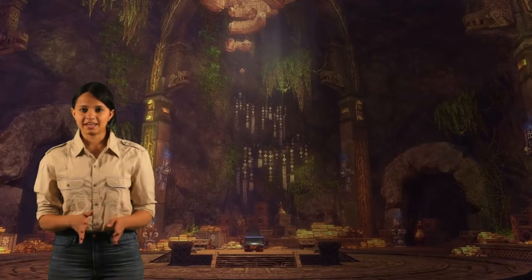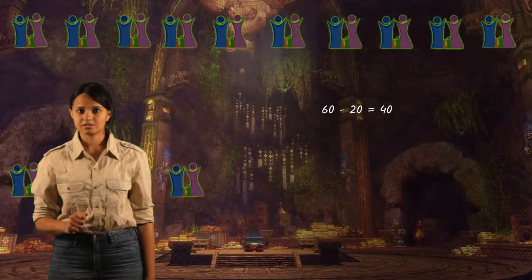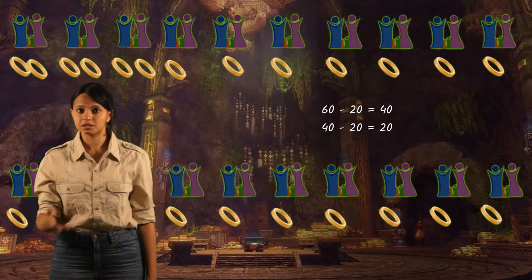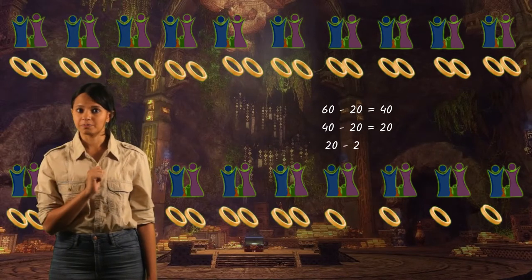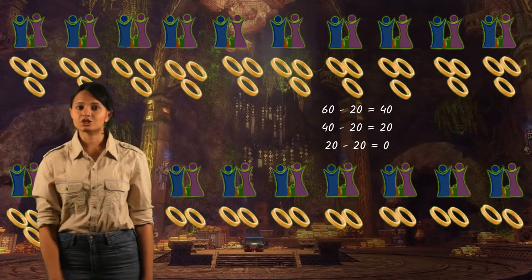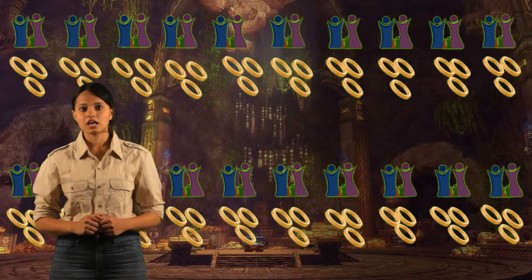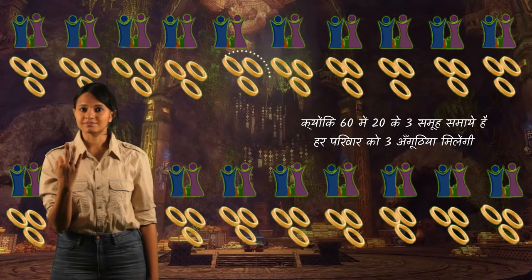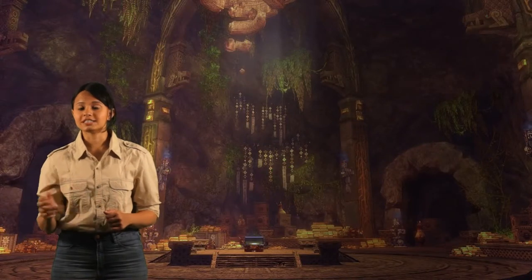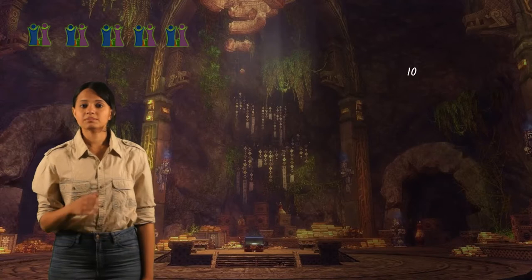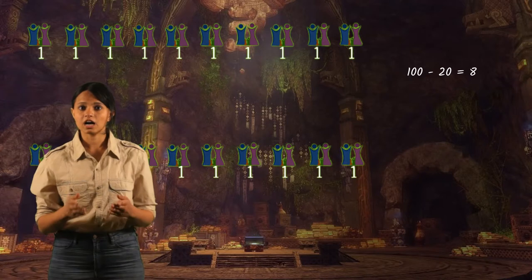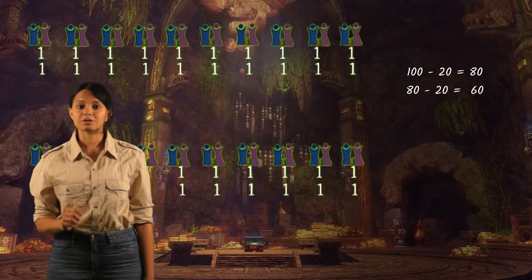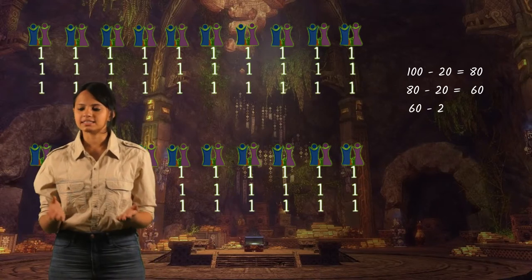अब सिक्कों का हिसाब लगाते हैं। हमारे पास 100 सिक्के हैं और 20 परिवार हैं। 100 को 20 से भाग देने पर हर परिवार को 5 सिक्के मिलेंगे।